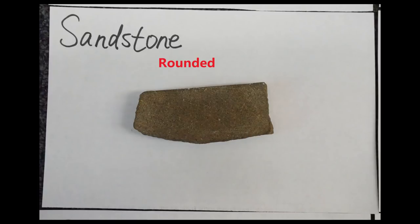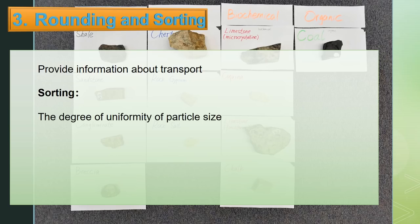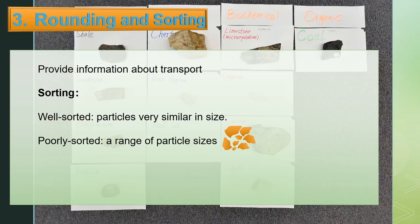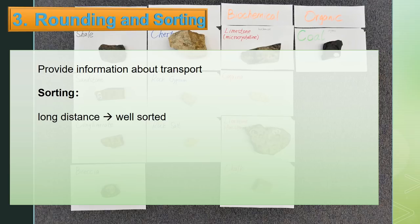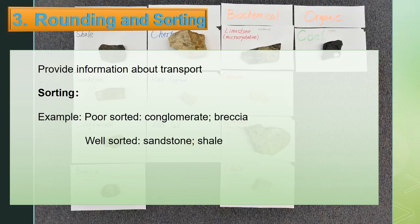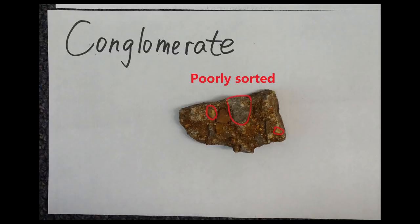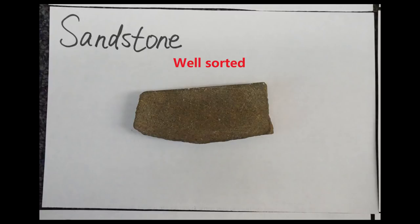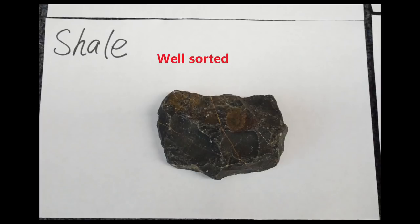Sorting refers to the degree of uniformity of particle size. Well-sorted means particles are very similar in size, and poorly sorted means a range of particle sizes. Sediments that travel long distances will be well-sorted, and short distances lead to poorly sorted. For example, conglomerate and breccia are poorly sorted, while sandstone and shale are well-sorted. Notice the large and small particles in conglomerate and breccia samples, and the even-sized particles in sandstone and shale.